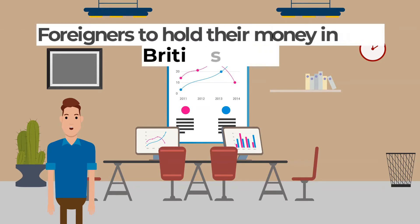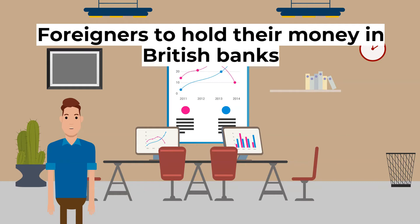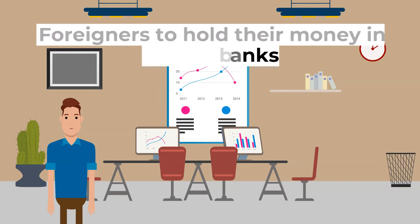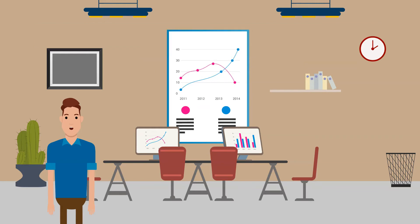Fourth, higher rates will increase the incentive for foreigners to hold their money in British banks as they can see a higher rate of return. As a result, there will be increased demand for pounds and the value of the pound will rise. This means that imports will be cheaper and exports will be more expensive, which decreases net trade and therefore aggregate demand.